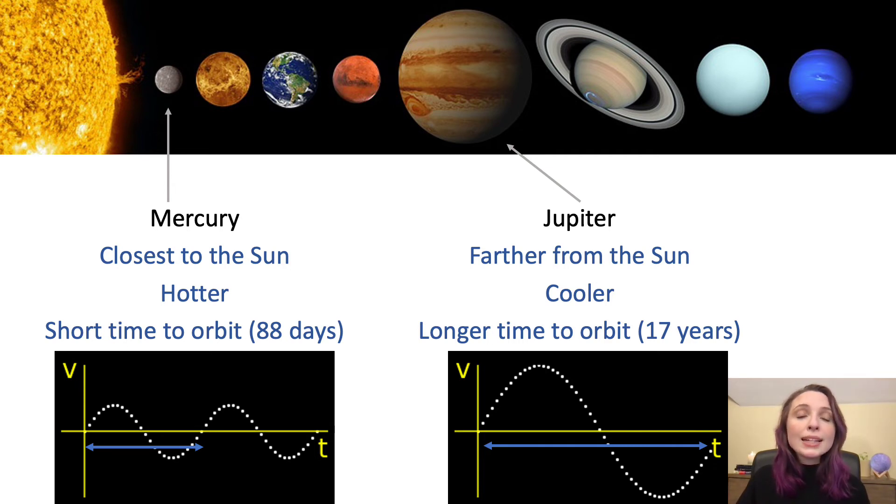And remember, anytime we take the measurements of the movement of a star over time, we can always measure how long it takes that star to wobble, which is the same amount of time that it takes a planet to go around that star. We can use that time to tell us if that exoplanet is close to its star and hot, like Mercury, or further from its star and cool, like Jupiter.